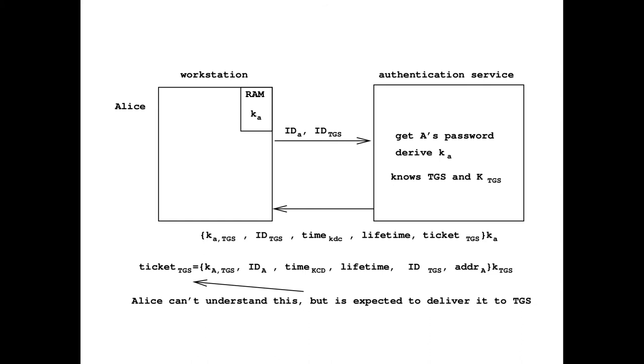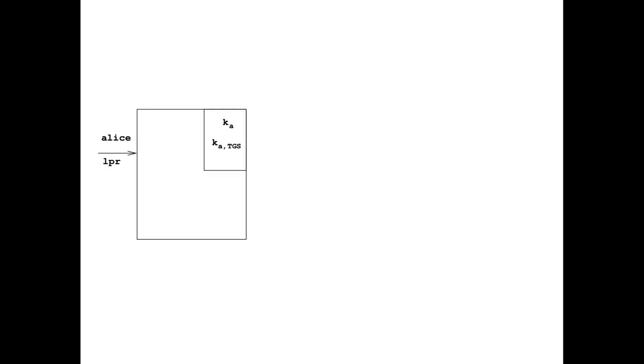Alice can't understand, decrypt, or change the ticket — she's just expected to deliver it. When Alice wants to print, she types the print command. At this point, she has K_A in RAM and the session key K(A,TGS) shared with the ticket-granting service, plus the ticket to send. She needs a session key K(A,V) between Alice and the printer, but she doesn't have that yet. So she goes to the ticket-granting service.